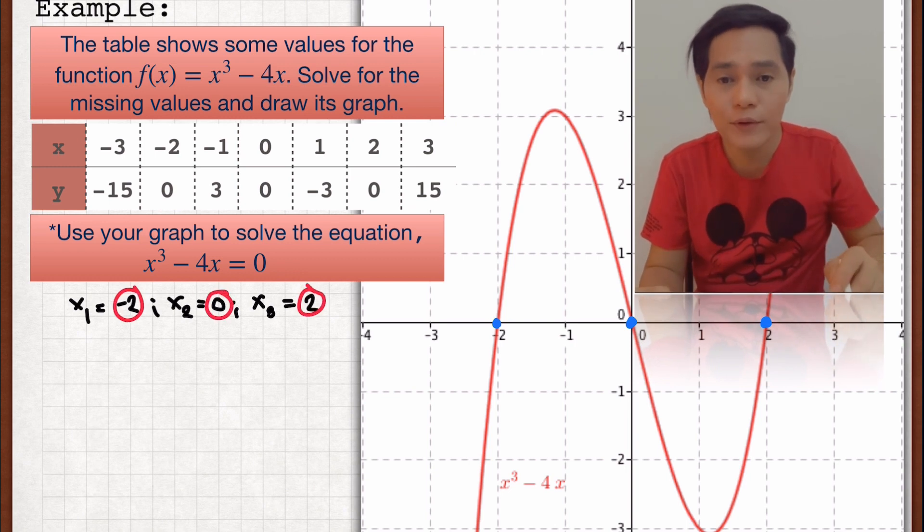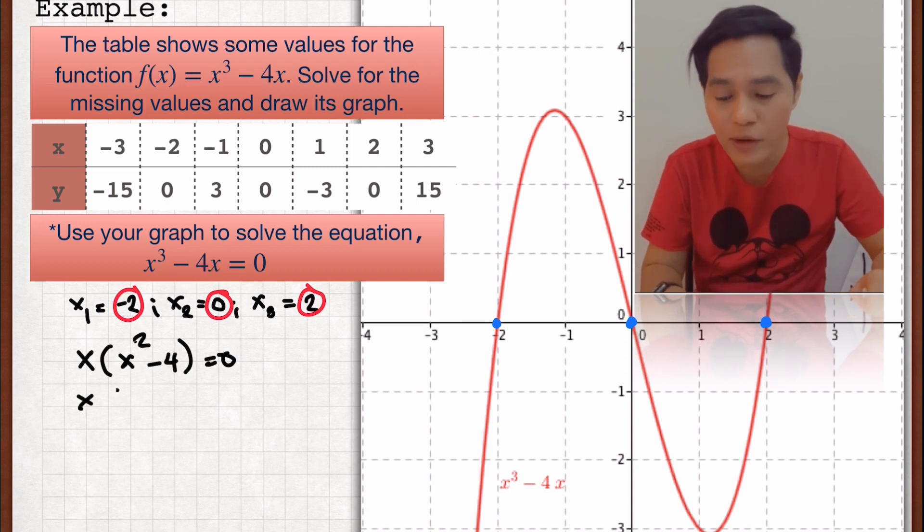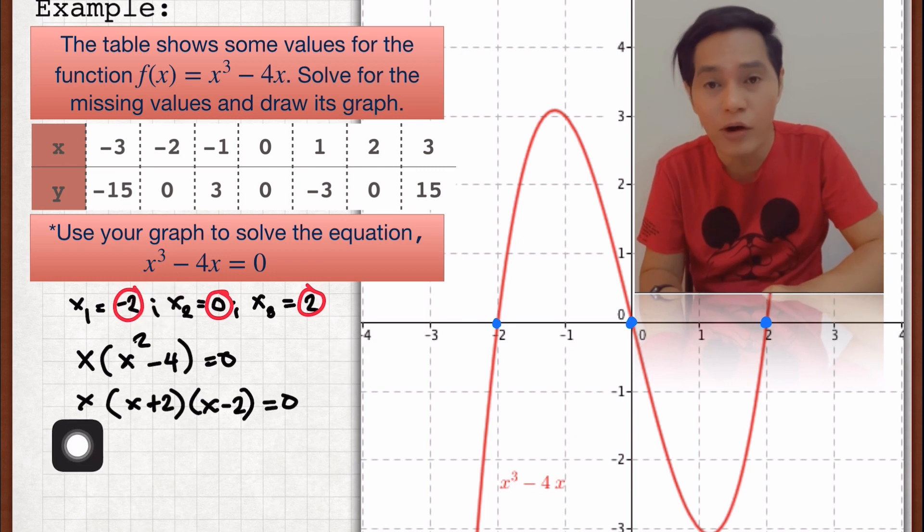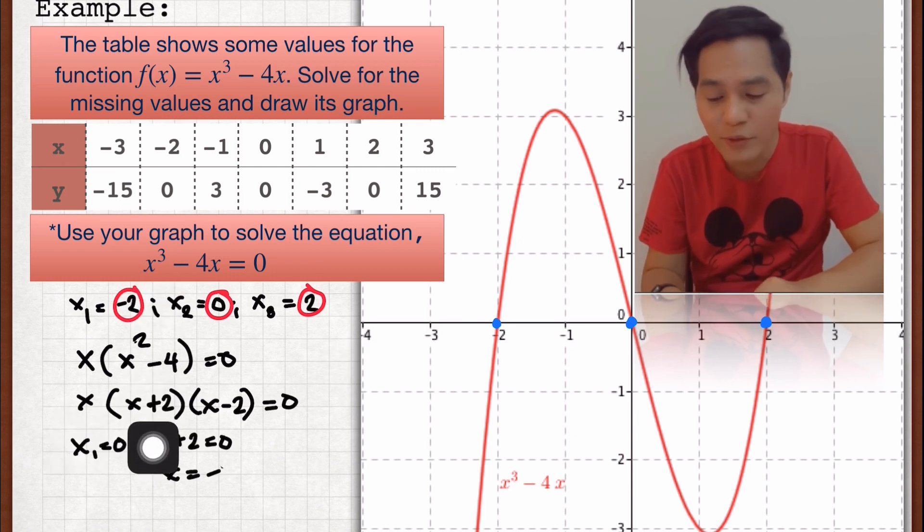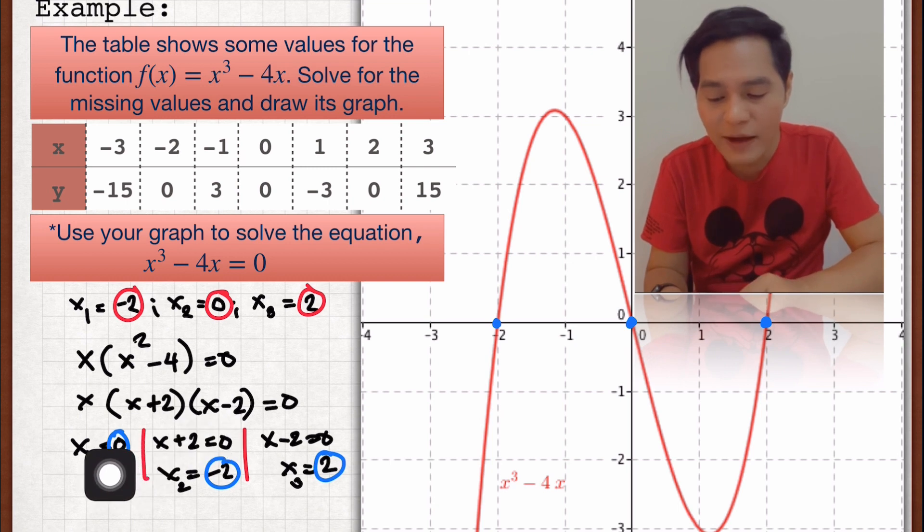Or we can also just simply solve the given equation by factoring. Just simply factor x since x is common. And then remember x² - 4, it's difference of two squares. So the factors are the sum and difference. So there you go. The values of x are 0, -2, and 2. And it's the same.